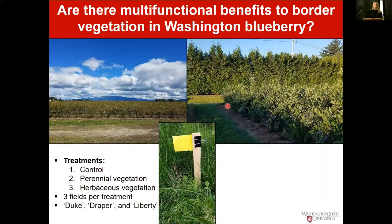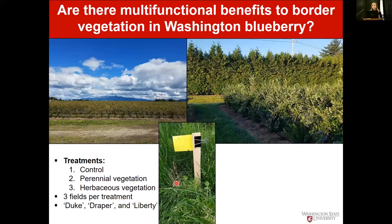We don't have wildflower plantings and weren't prepared to ask producers to plant them, but we do have different habitat types in western Washington that we utilized as treatments. Our control habitat was just mowed vegetation, sometimes adjacent to another crop like blueberry or potato. The second treatment was perennial vegetation, particularly woody perennials like arborvitae. The third was herbaceous vegetation — a mixture of monocots and broadleaf plants, mostly kept mowed. We also placed sticky cards in the fields to look at how different insect species were moving into the blueberry field.